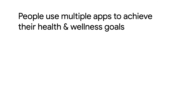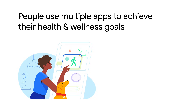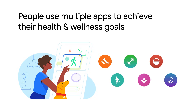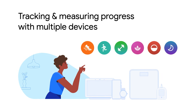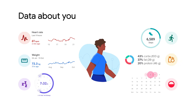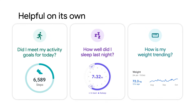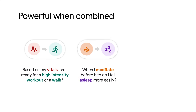There are many, many health and wellness apps available that each offer unique functionality. Different people have different combinations of these apps and use them to achieve their health and wellness goals. This may involve interacting with these apps across multiple screens that in turn talk to multiple measuring devices. It's a lot of data about an individual, which is somewhat helpful on its own, but is more useful when the signals from different sources can be combined and correlated.